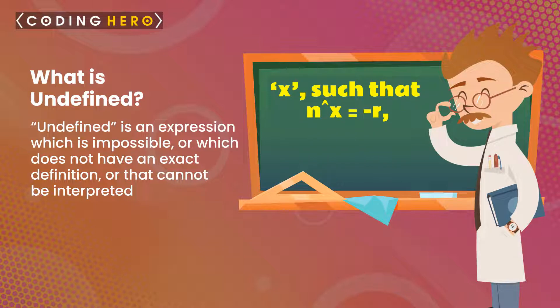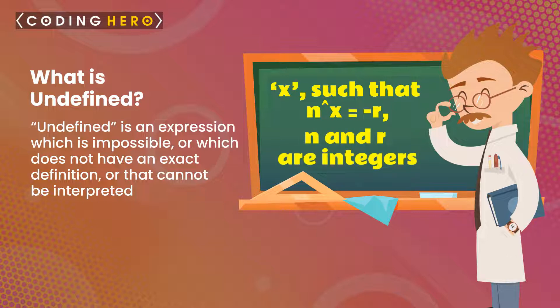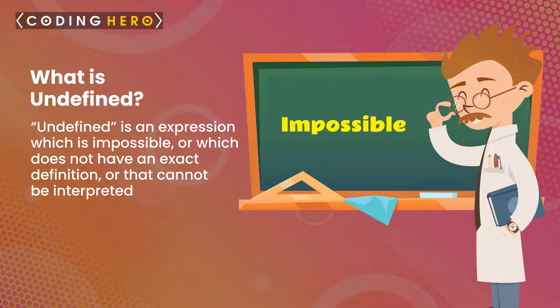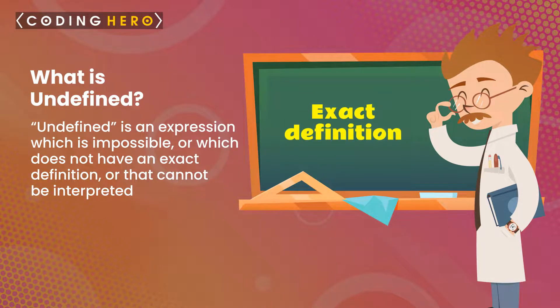Since we cannot find a number x such that n to the power x is equal to minus r, where n and r are integers, we say that the logarithm of a negative number is undefined. Mathematically, 'undefined' can be defined as an expression which is impossible, or an expression which does not have an exact definition, or an expression that cannot be interpreted.